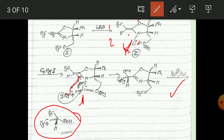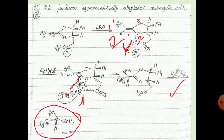Regarding Z and E enolate formation: considering priorities, CH3 is the first priority and hydrogen is the second priority on one carbon; oxygen is the first priority and nitrogen is the second priority on the other. When the two lower-priority groups are on the same side, that is the Z-enolate; when the bulky groups are on opposite sides, that is the E-enolate.